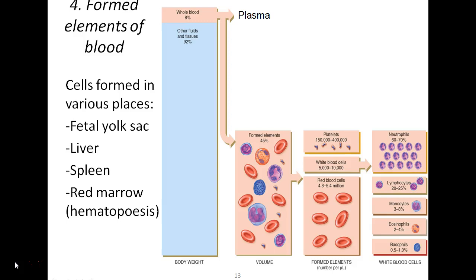Now we look at the other roughly half of blood — the formed elements. These formed elements are diverse, mostly cellular-based structures. They get formed in various places: the fetal yolk sac, the liver, the spleen (which also breaks them down), and primarily the red marrow inside the medullary cavity of bones, which undergoes hematopoiesis — the process of making new blood cells.